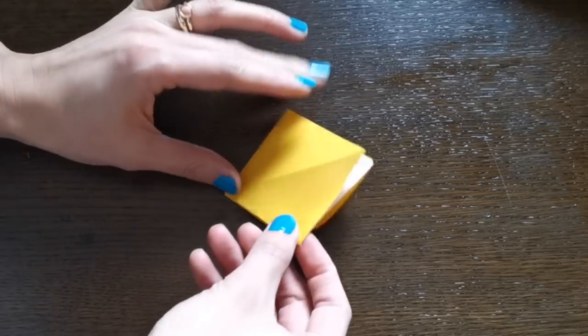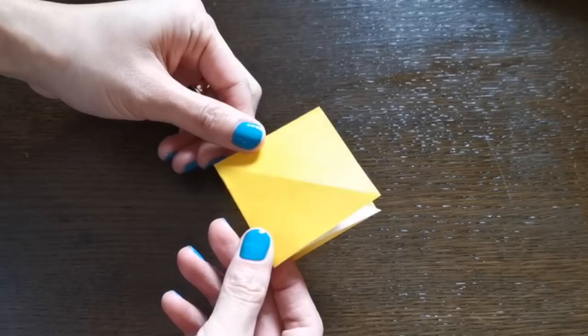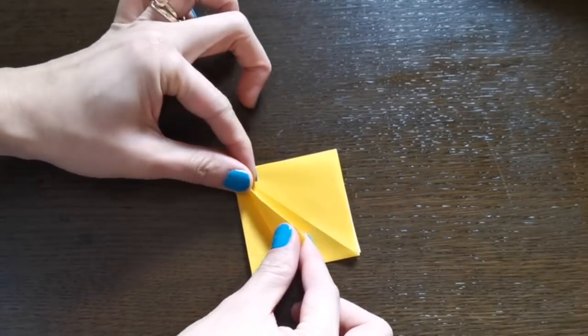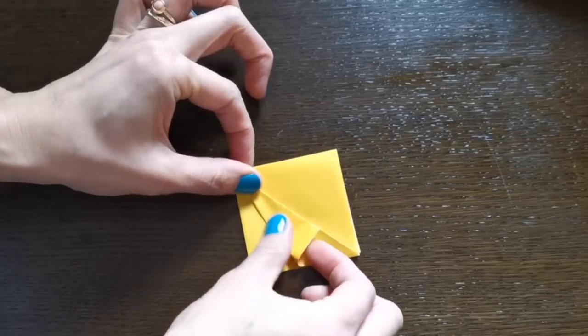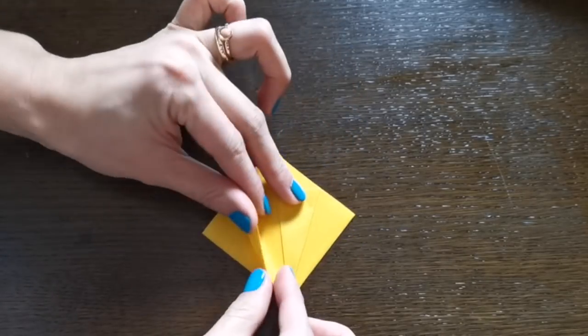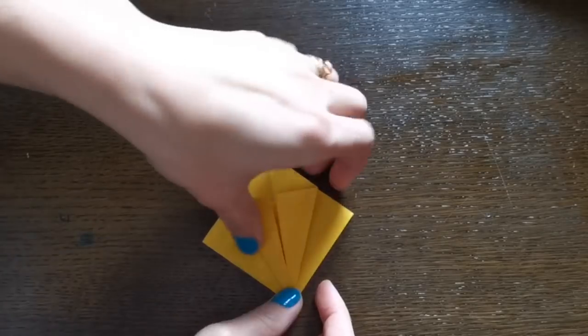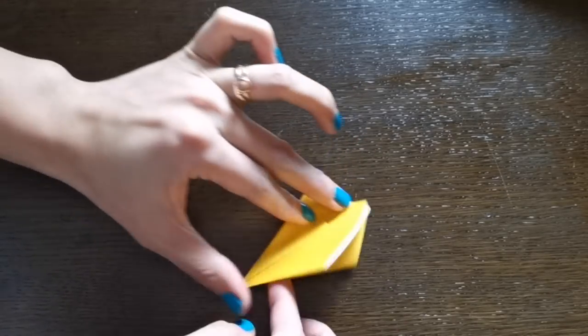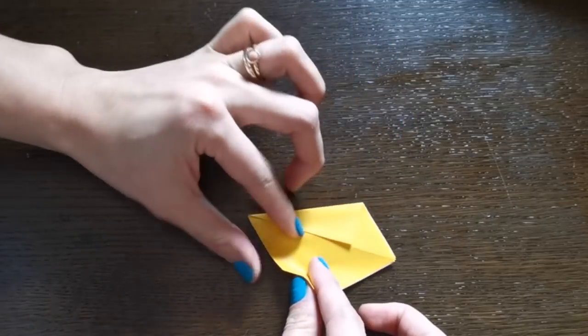Now you've got two little pockets and one closed side like this. Now you're going to fold a triangle into the middle, and turn around and do exactly the same. Fold the side into the middle.